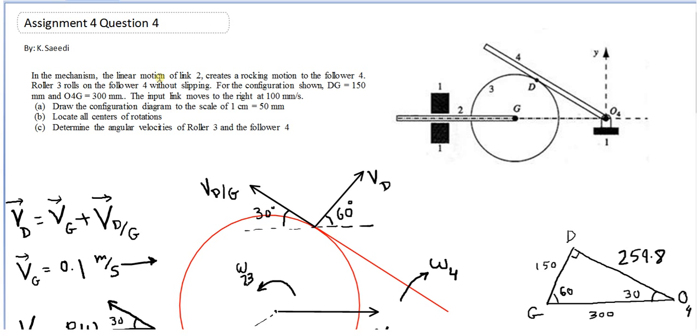In this mechanism, the linear motion of link 2 which moves to the right and left creates a rocking motion at this bar member 4. The disc rolls on the follower without slipping. There is no slipping between the disc and the bar here. Point D doesn't slip and it's important in this problem.